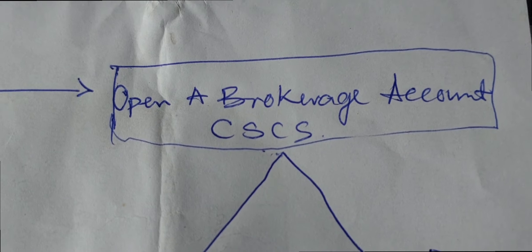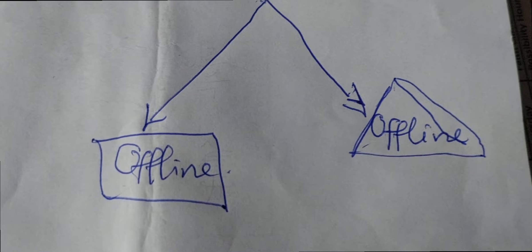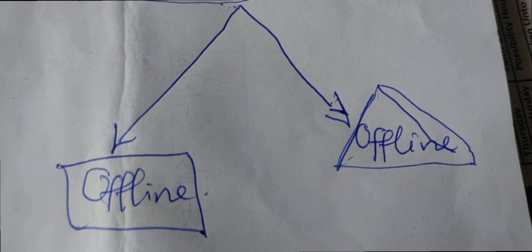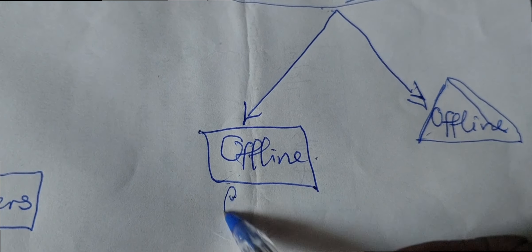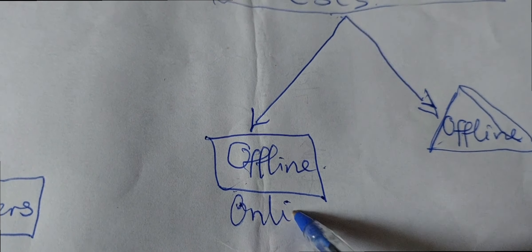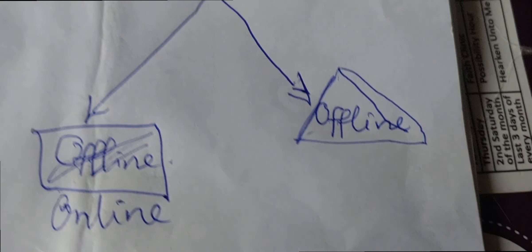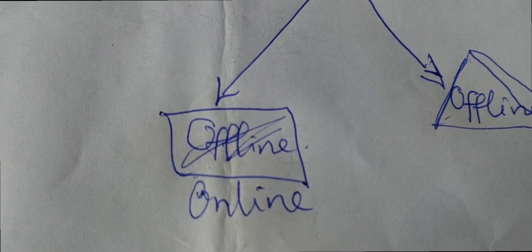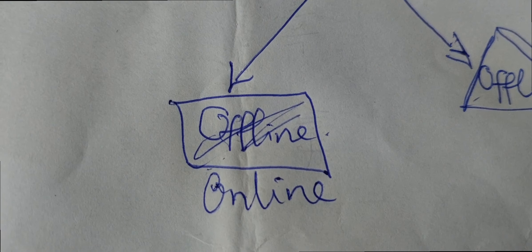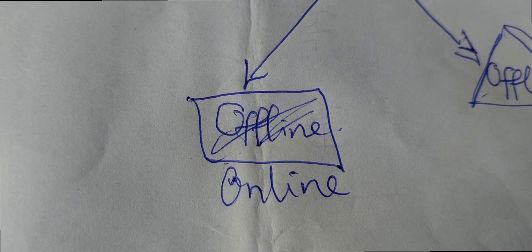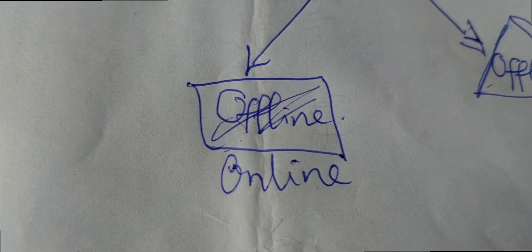Which is CSCS. There are two ways you can go about it: you can do offline, you can do online. You can do online and you can do offline. Online is there are some apps that you can have on your phone and you can open them, do your KYC, and you can start investing in the stock market.